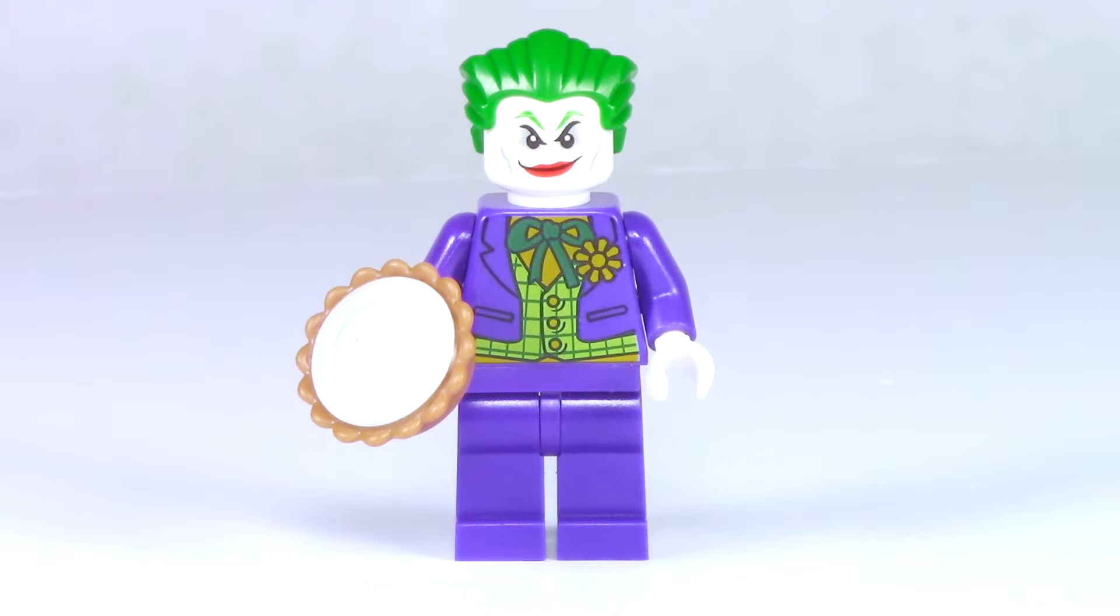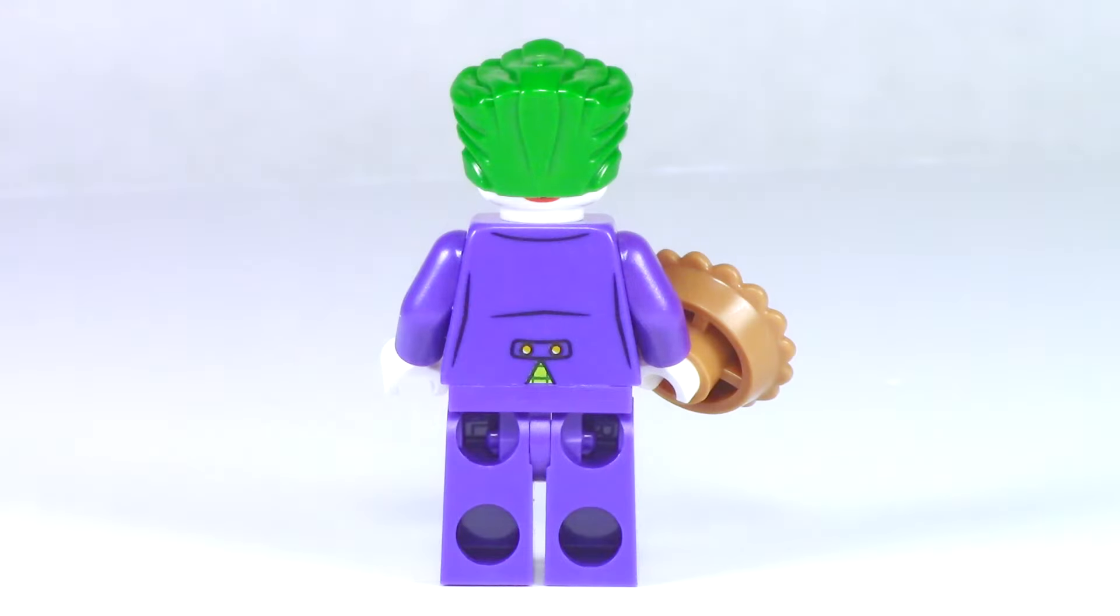The green hair piece really tops off the look, and he comes with one accessory, a small pie. The Joker does have a double-sided face, and on the other side we get this evil smirk. The back of the torso also has some printing to really finish out the look of the suit jacket.